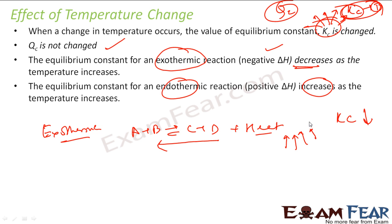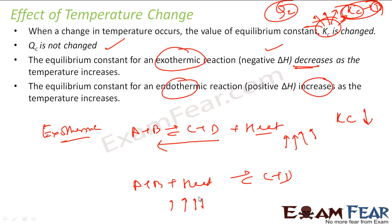The KC has to decrease. If KC is increasing, the reaction is going more forward; if KC is decreasing, the reaction is going more backward. Similarly, for an endothermic reaction — A + B + heat gives C + D — if you increase temperature, the system will move in the forward direction to reduce the stress of heat, so KC will increase.